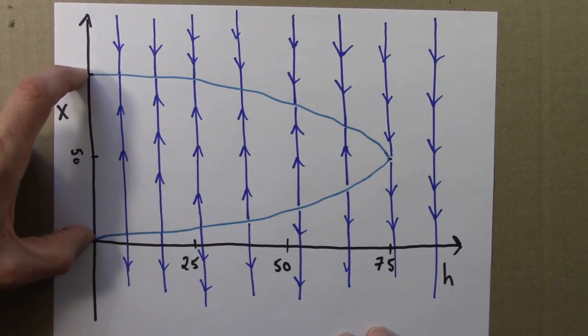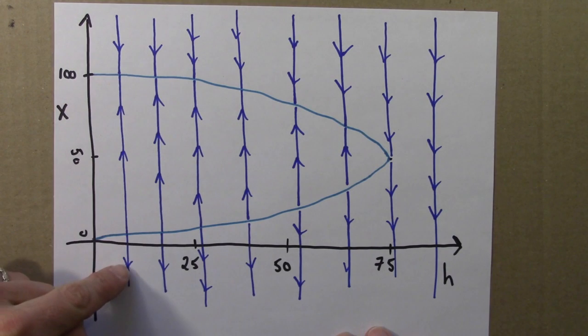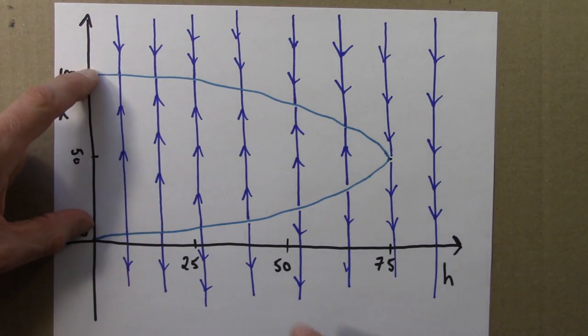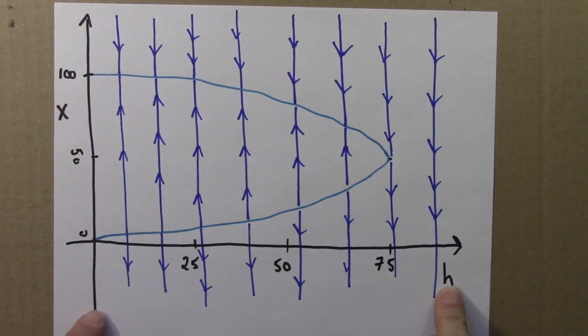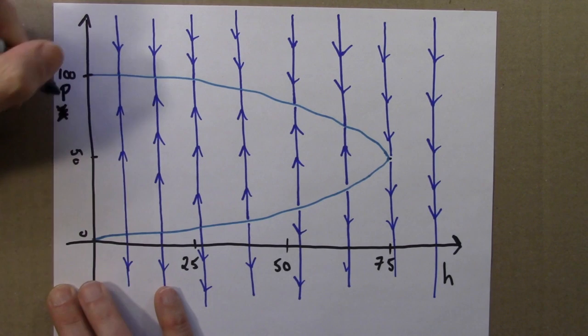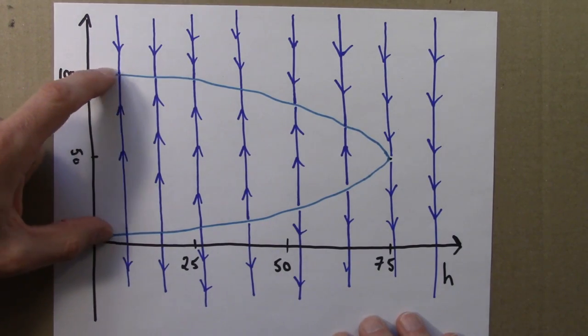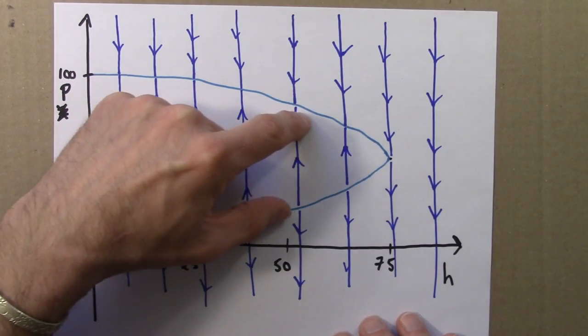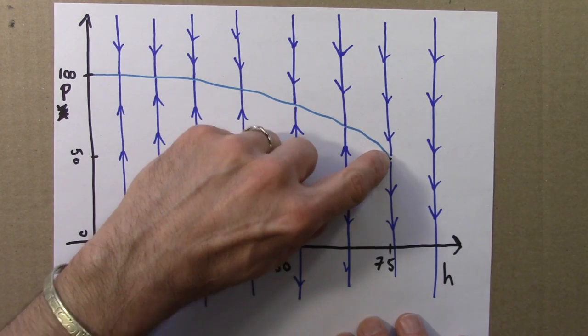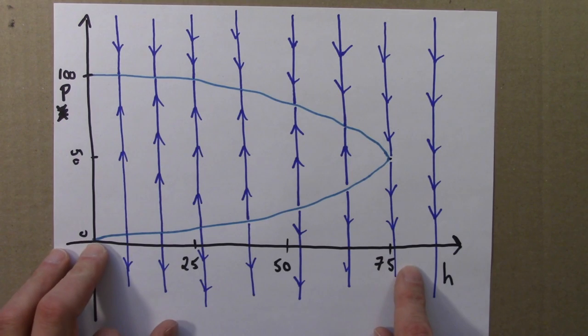So we have two fixed points. This one is stable and this is unstable. As h increases, this is h down here. Let me write this as p for population instead of x. The variable name doesn't really matter. So as h increases, these two fixed points get closer and closer together. At 75, there's only one fixed point. It's a sort of funny half stable one. And then any harvest rate above 75,